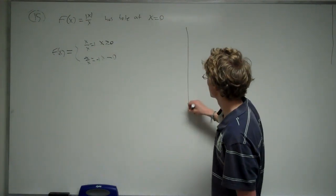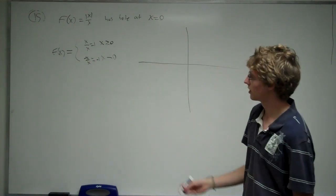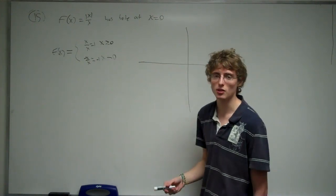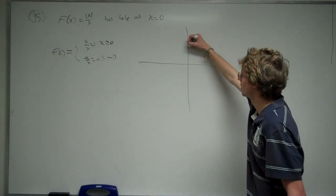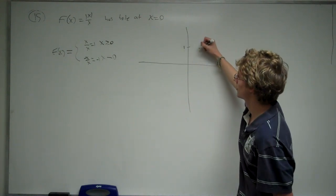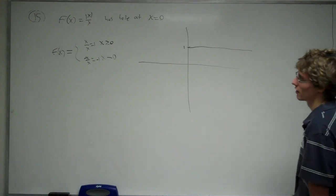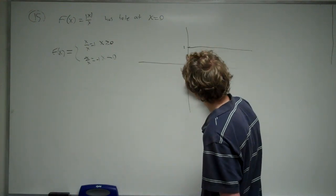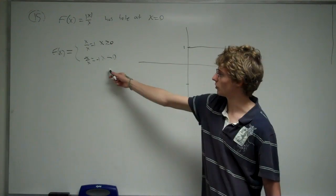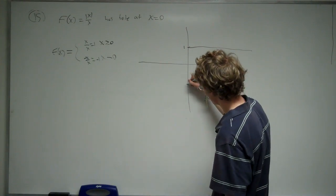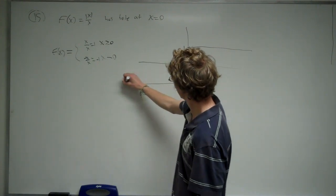So, we draw out our graph here. When x is greater than or equal to 0, we have the graph at x equals 1. So, that's just going to be a horizontal line like this. When x is less than 0, we're going to have the graph of negative 1, which is a horizontal line like this.